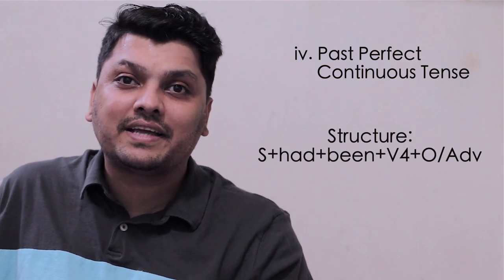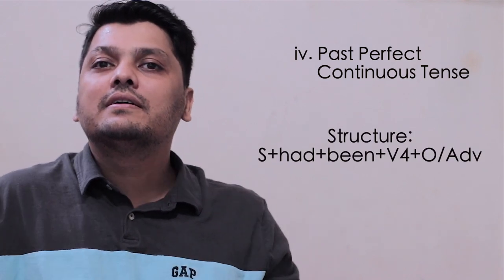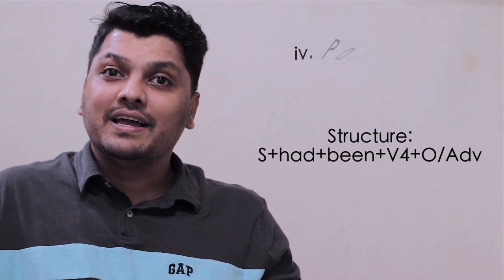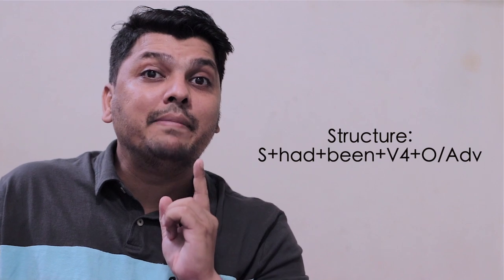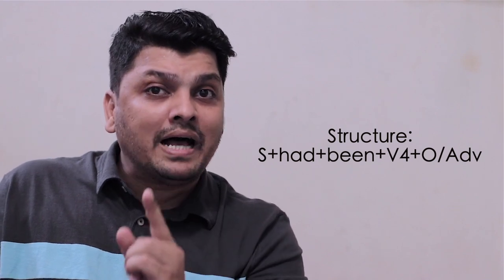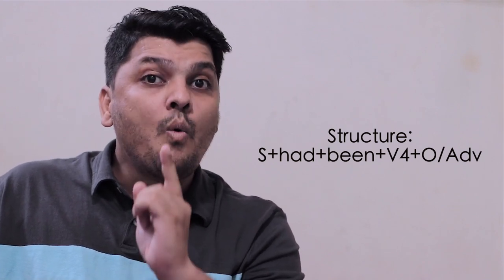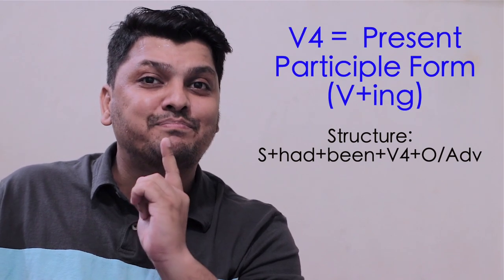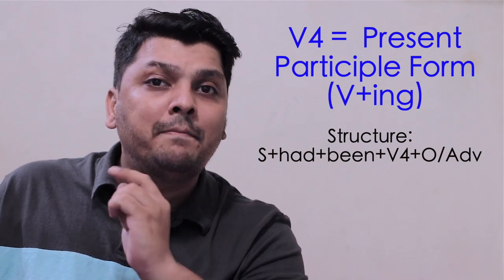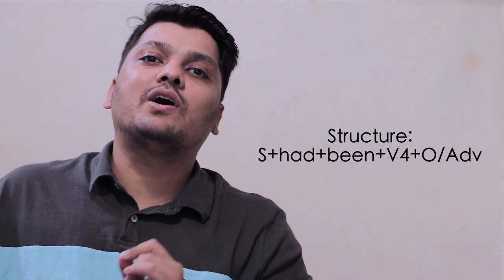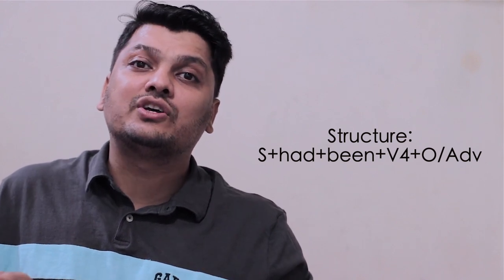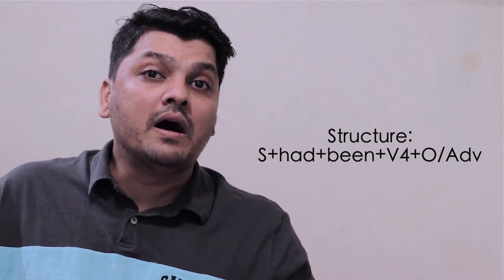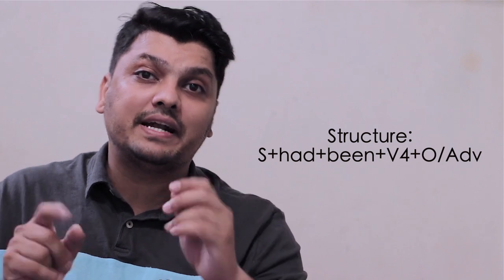How to identify past perfect continuous tense? Here is the structure: subject plus 'had' plus 'been' plus verb in the fourth form (present participle, verb+ing) plus object or adverb. This is the structure of past perfect continuous tense.